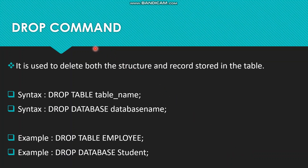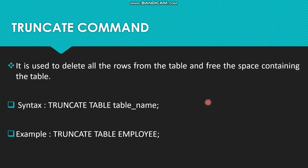Now the DROP command is used to delete both the structure and the records stored in the table. There are two types of syntax: DROP TABLE table_name and DROP DATABASE database_name. Examples: DROP TABLE employee and DROP DATABASE student. Then we have the TRUNCATE command, used to delete all the rows from the table and free the space. Syntax: TRUNCATE TABLE table_name. Example: TRUNCATE TABLE employee.